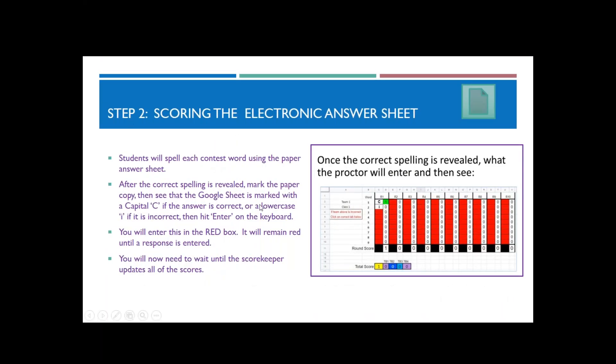These sheets have been protected, so the only place you can actually enter anything is in the red box on this. Don't worry about entering something in the wrong spot. It won't let you. It'll pop up with a message saying that you're trying to enter something in a protected cell and it won't let you do it. So you can't really break it. All you can do is enter it in the red cell. Once you've entered your score in the red cell, you wait for the scorekeeper to update everything and then you move on.